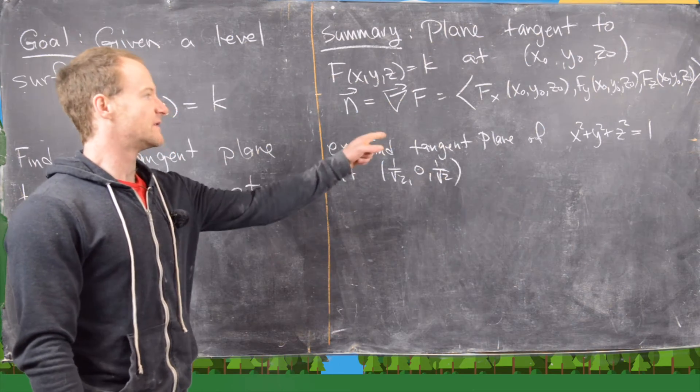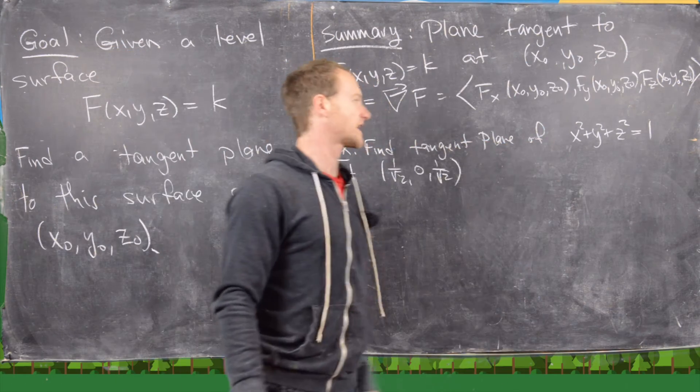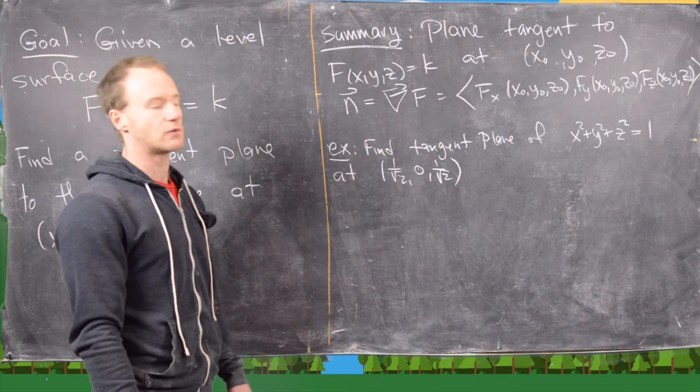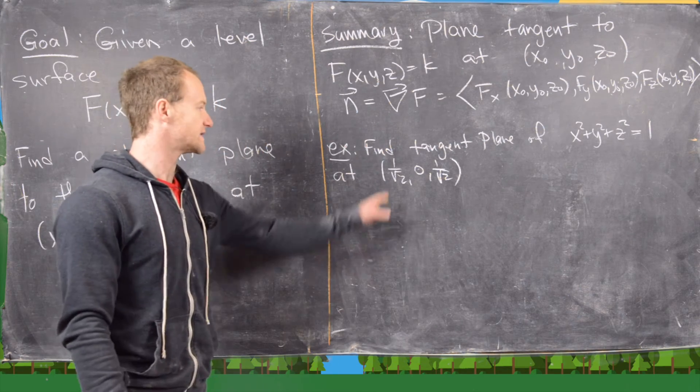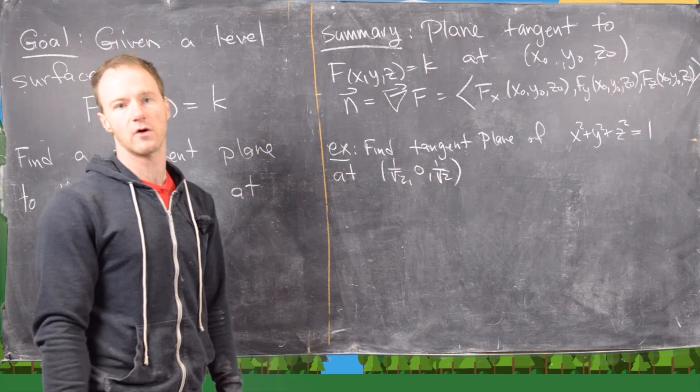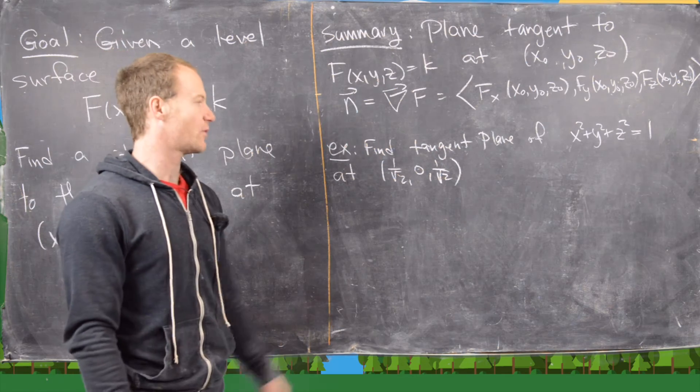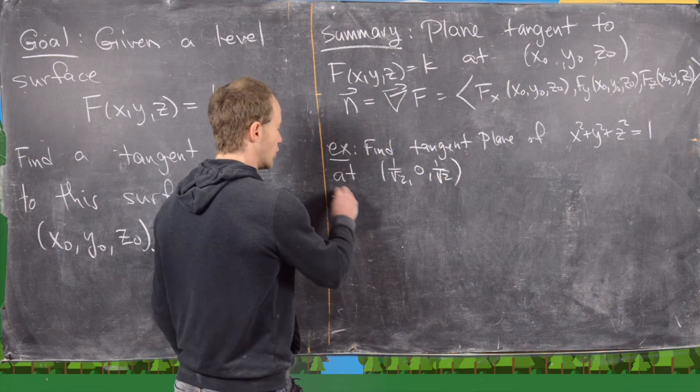So let's look at an example. The tangent plane of x squared plus y squared plus z squared equals 1 at this point, 1 over root 2, 0, 1 over root 2. So we've got a point, now we just need a normal vector.